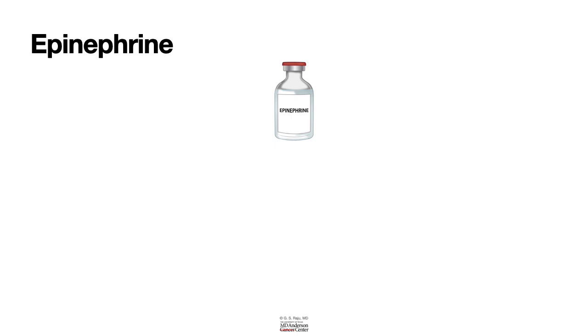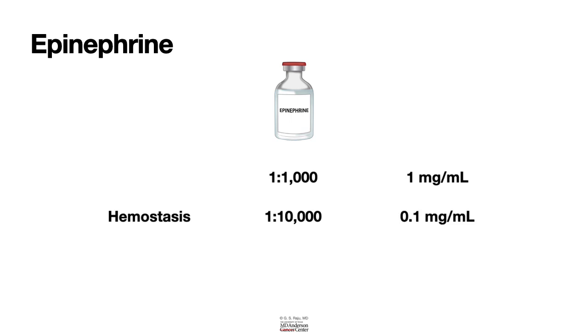Epinephrine is available either in a vial or in a prefilled syringe. It's important to learn about the dose of epinephrine used either to control or prevent bleeding. The epinephrine in the vial is about 1 in 1,000 dilution, that is typically 1 milligram per ml. When you want to use epinephrine for hemostasis, we use 1 in 10,000 dilution, that is 0.1 milligram per ml.